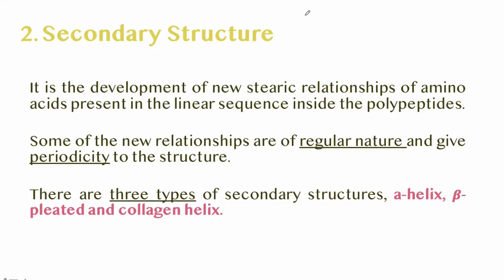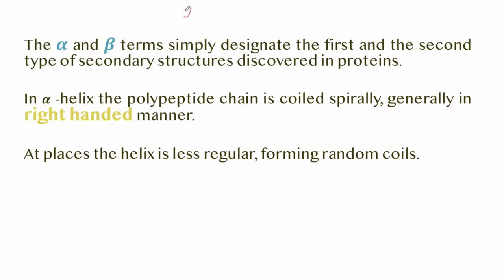The secondary structure involves the development of new steric relationships of amino acids present in a linear sequence inside the polypeptides, with formation of hydrogen bonds between amino acids. There are three types: alpha helix, beta pleated sheet, and collagen helix. Alpha and beta were the first and second types of secondary structures discovered in proteins, which is why they were named as such.